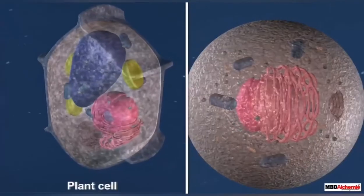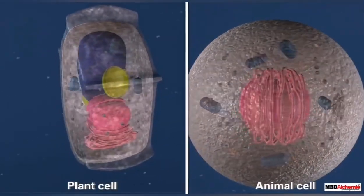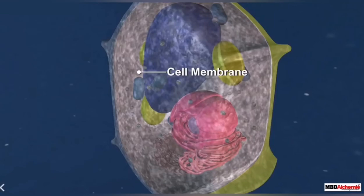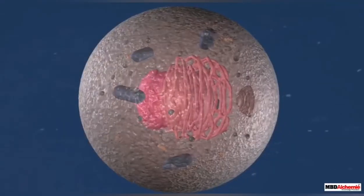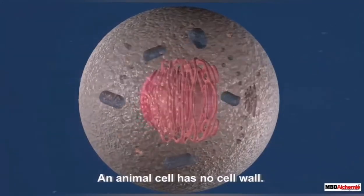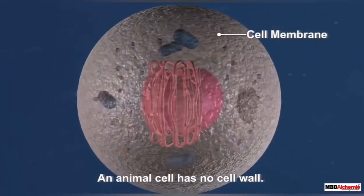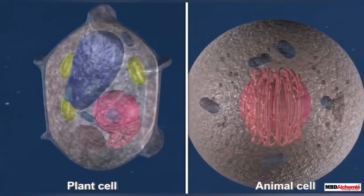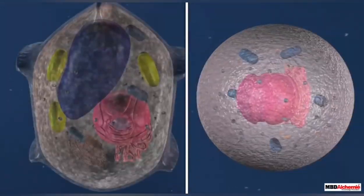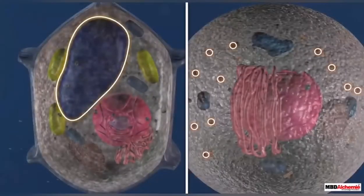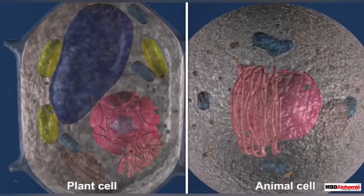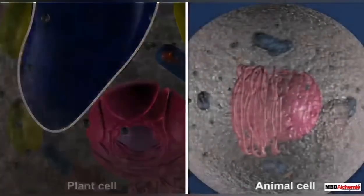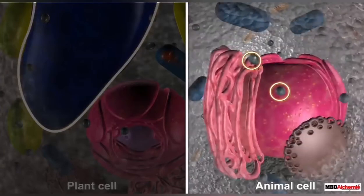As you can see, both plant and animal cells appear different from the outside. A plant cell is surrounded by a cell wall on the outside, with a cell membrane present next to it. In the case of an animal cell, there is no cell wall — only the cell membrane surrounds the cell. Inside, you can see spaces in both cells called vacuoles. A plant cell has one large vacuole, whereas an animal cell has multiple smaller vacuoles.